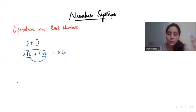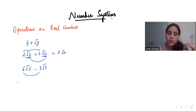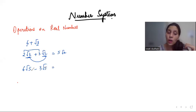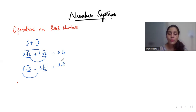Similarly, if I have 6 root 5 minus 3 root 3, I cannot do 6 minus 3 because my roots are different. You can subtract only if your roots are the same. For instance, if both are root 5, then I can do 6 minus 3, which gives 3 root 5. So addition and subtraction work only if the roots are the same.